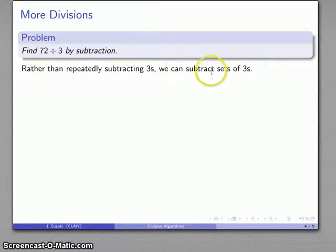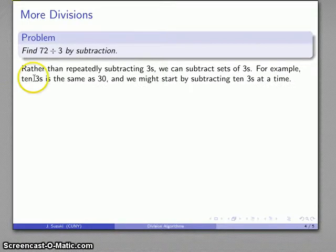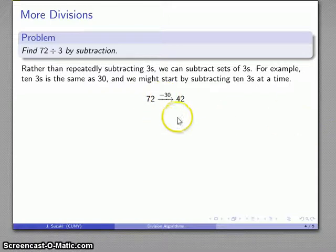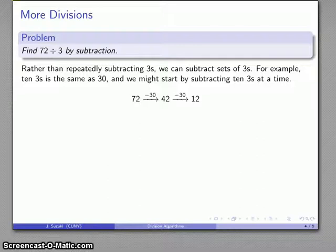But I can also instead subtract sets of 3's. So I don't have to subtract 3, I can subtract groups of 3. And the only thing I have to keep track of is how many sets of 3 I've subtracted. And just as an easy observation, 10 threes is 30. So I might start by subtracting 10 threes all at once. So from 72 I subtract 30, that takes me down to 42. And I can do that again, subtract another 30.